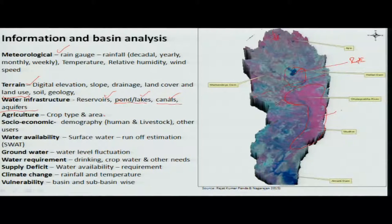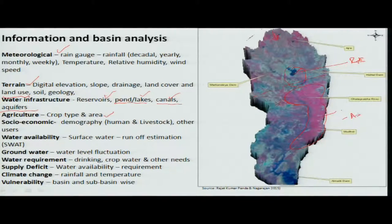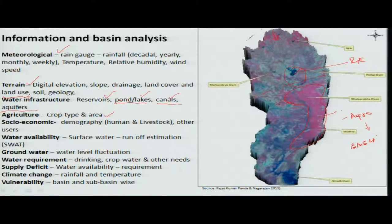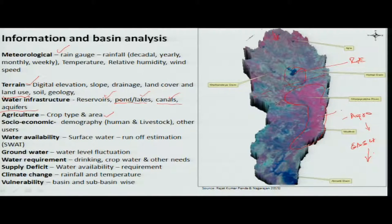Crop area and crop type are also significant. In a progressive area, there are suitable crops for a particular agro-climatic zone, but for developmental purposes, cash crops are coming up, and there is a shift toward cash crops that are not suitable for that particular agro-climatic region. This leads to certain hardships and other unwanted outcomes due to production losses.